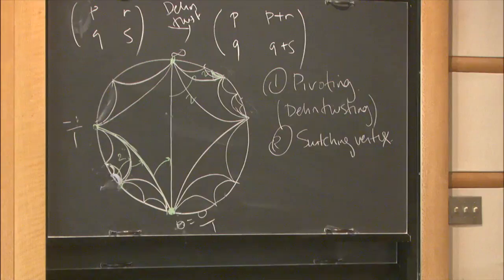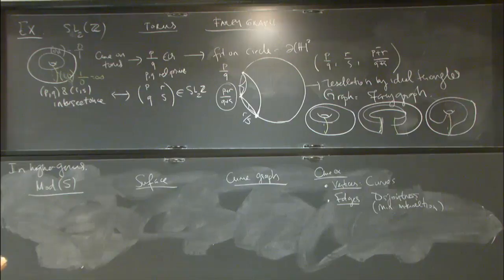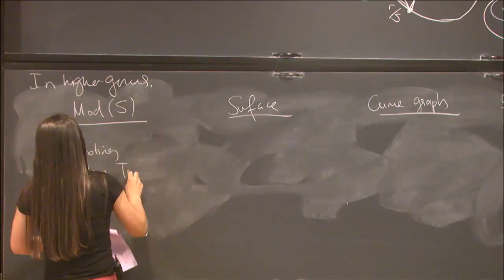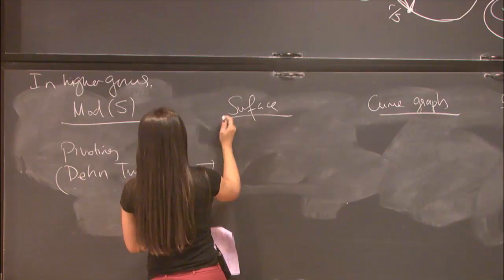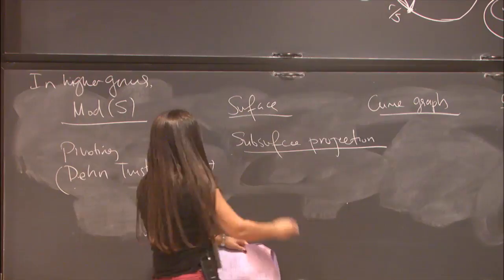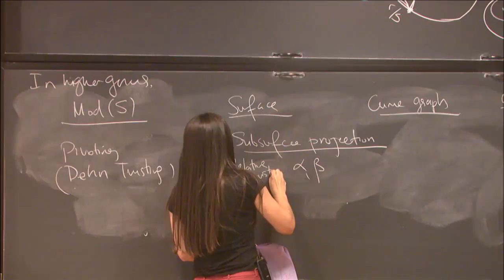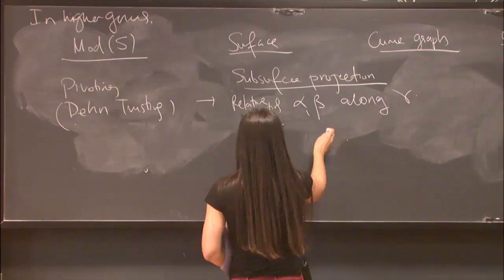The curve complex is hyperbolic by Masur and Minsky's work. The analog to pivoting is what's called subsurface projection. Basically what's going on: you take two curves alpha and beta, and there's a notion called relative twisting of two curves along a third curve. You cut your surface along a curve gamma, getting the surface S minus gamma, which gives you another surface with two copies of gamma as boundary.